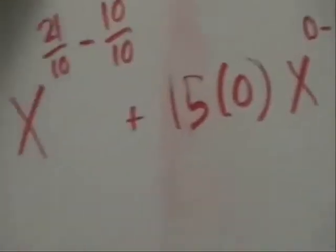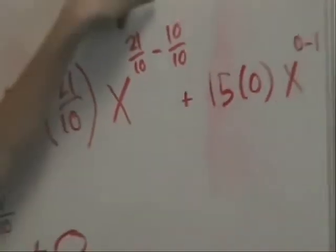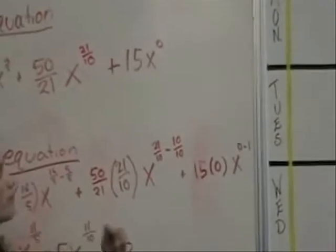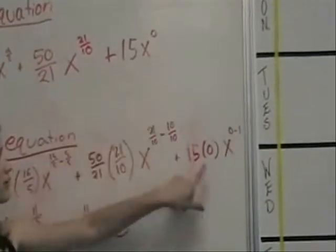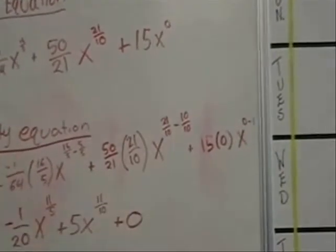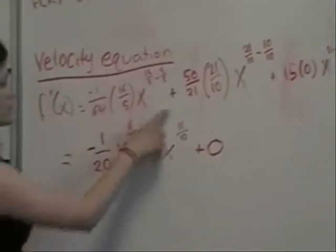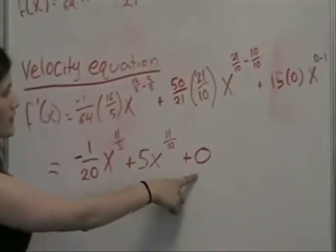And here because there was no x, because x to the 0 is equal to 1, so we take down the power of 0 and multiply it by 15 so we get 0. So in the final equation we have these two terms change and we have nothing for 15x.